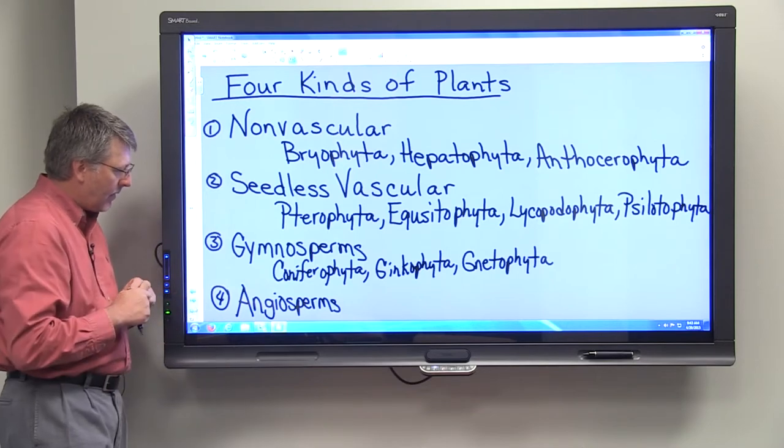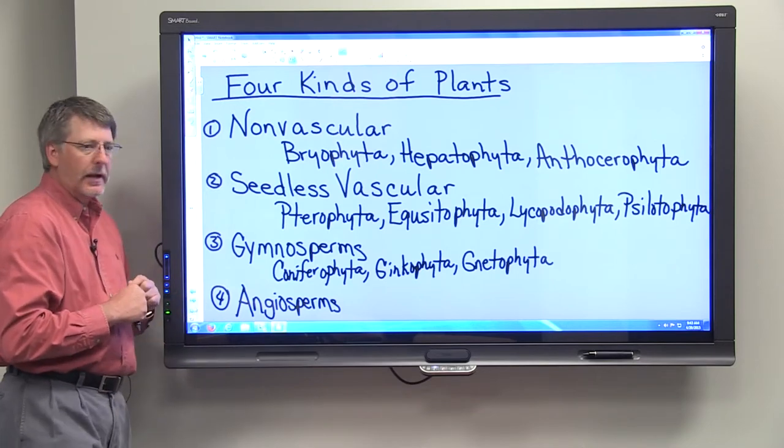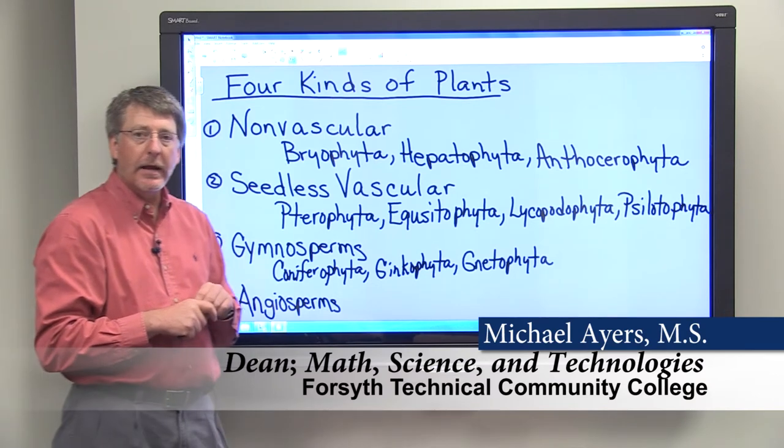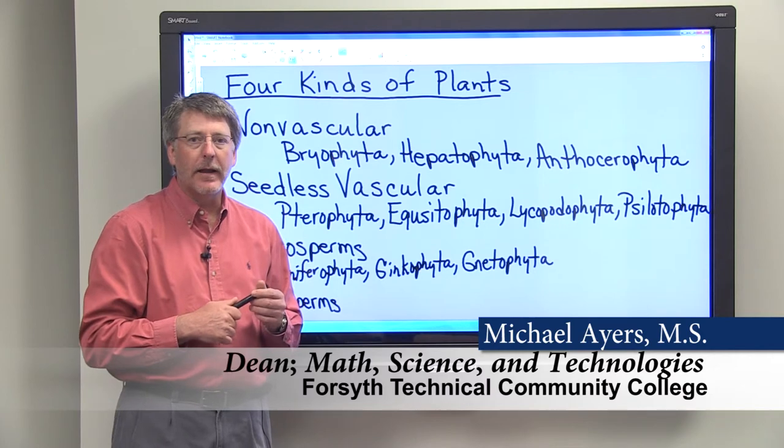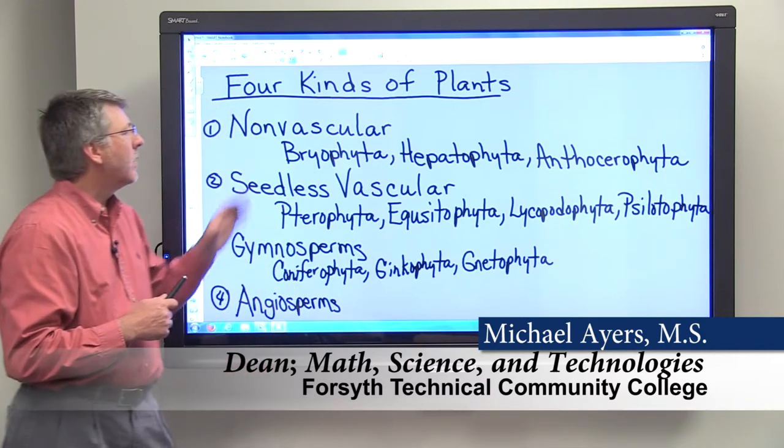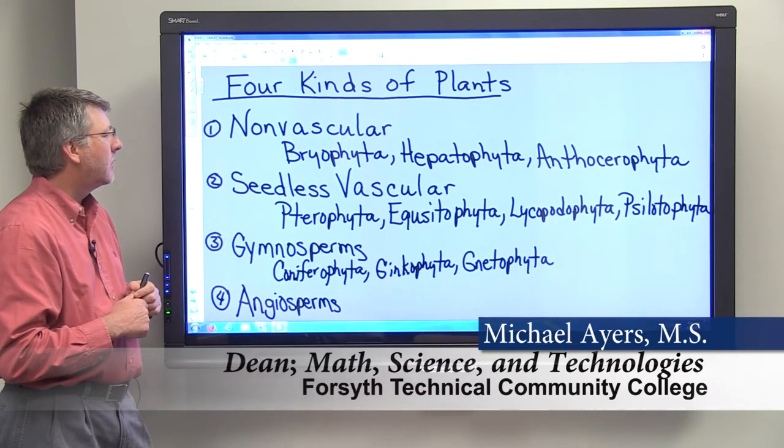Then we have the angiosperms, and angiosperms, of course, are your flowering plants. Flowering plants make up 90% of the plant kingdom. So we have four different kinds of plants.